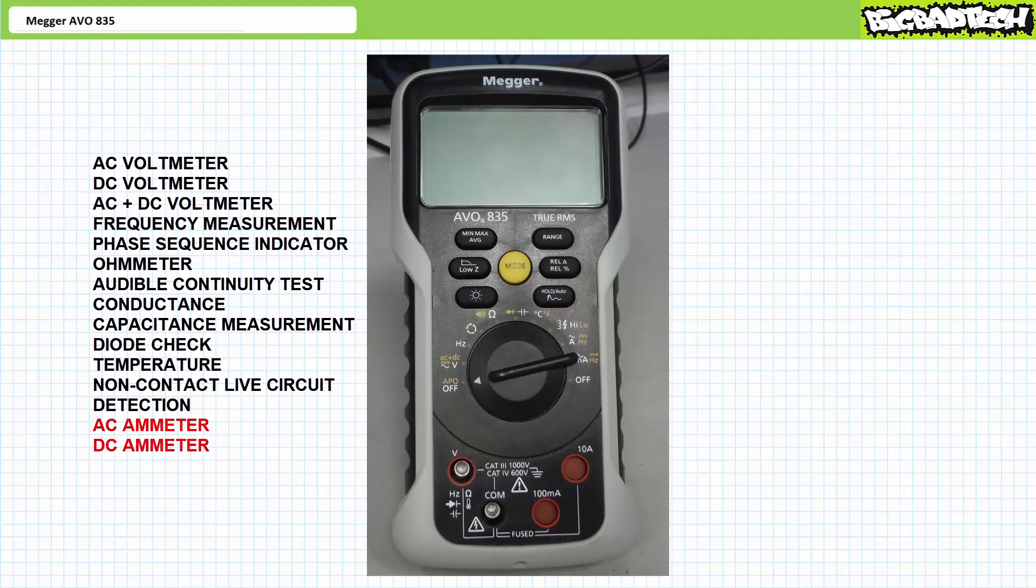Today, we'll take a brief look at the AC and DC ammeter functions. Additionally, we'll examine the current frequency measurement function. We'll explore other functions and features of this DMM in other lectures.